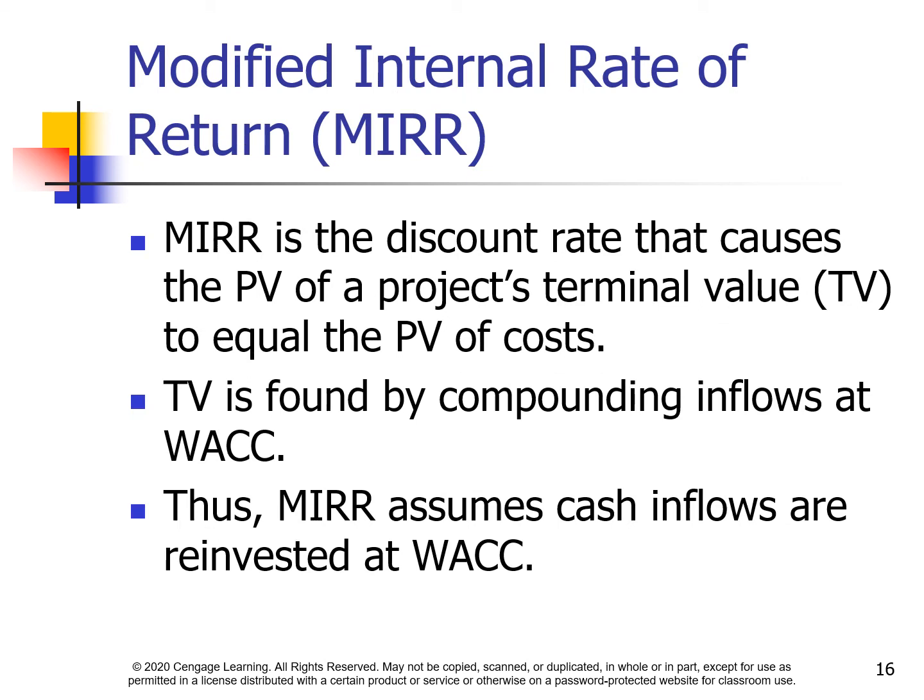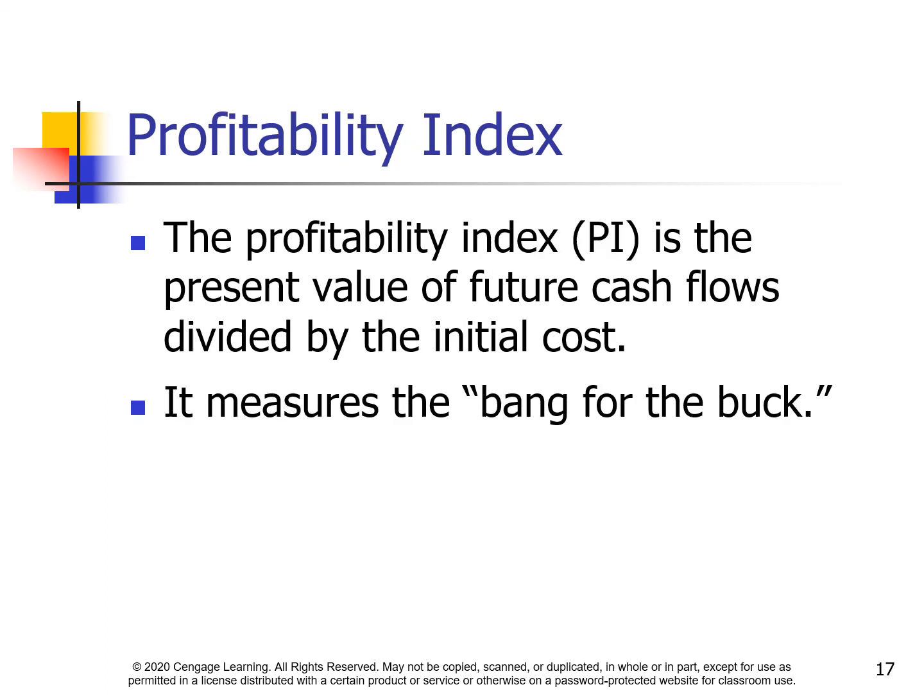Modified internal rate of return (MIRR) is the discount rate that causes the present value of a project's terminal value to equal the present value of costs. Terminal value is found by compounding inflows at the WACC. Thus, MIRR assumes cash inflows are reinvested at the WACC. The profitability index (PI) is the present value of future cash flows divided by the initial cost — it measures the bang for the buck.